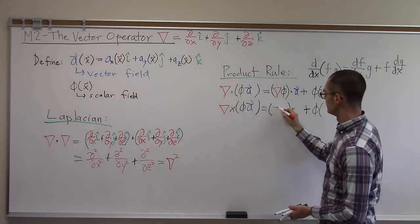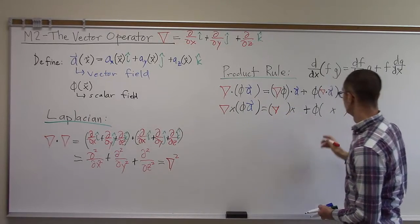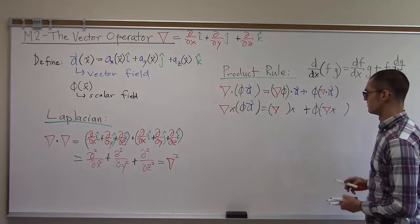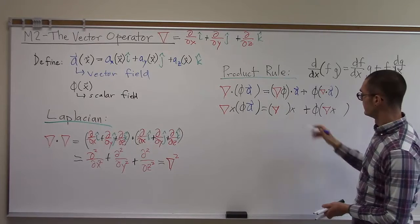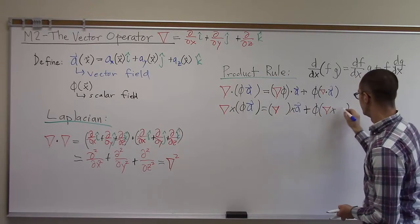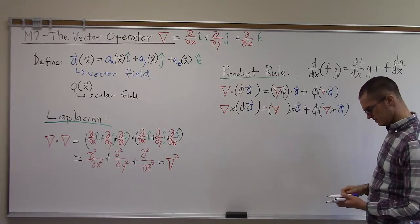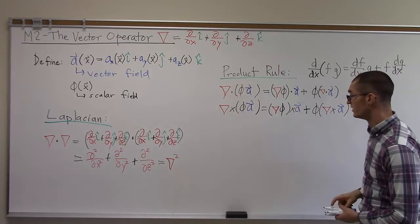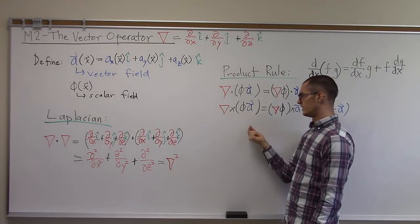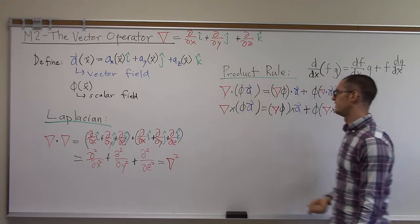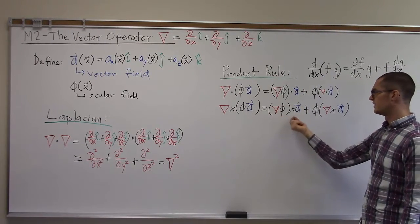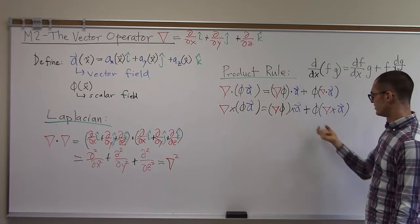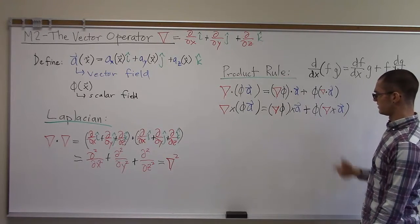Just filling that in. Gradient, here's our vector operator again, vector field a, and scalar field phi. So the curl of the vector field phi a is the gradient of phi crossed with a, plus phi times the curl of a.